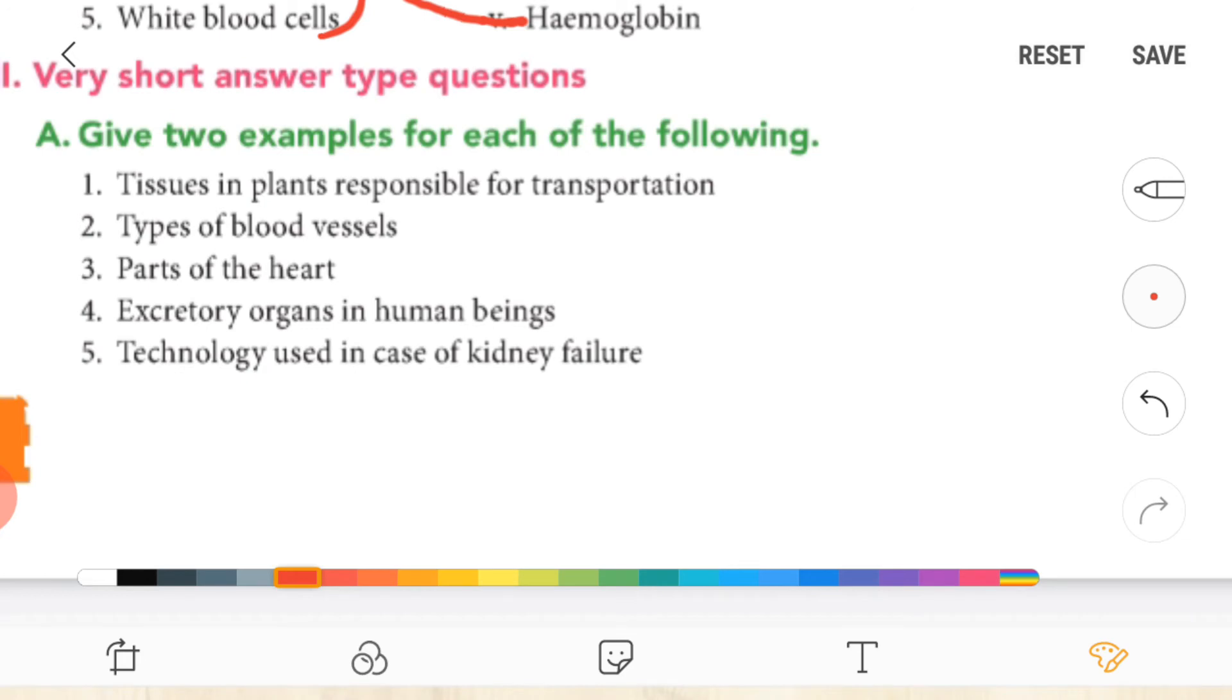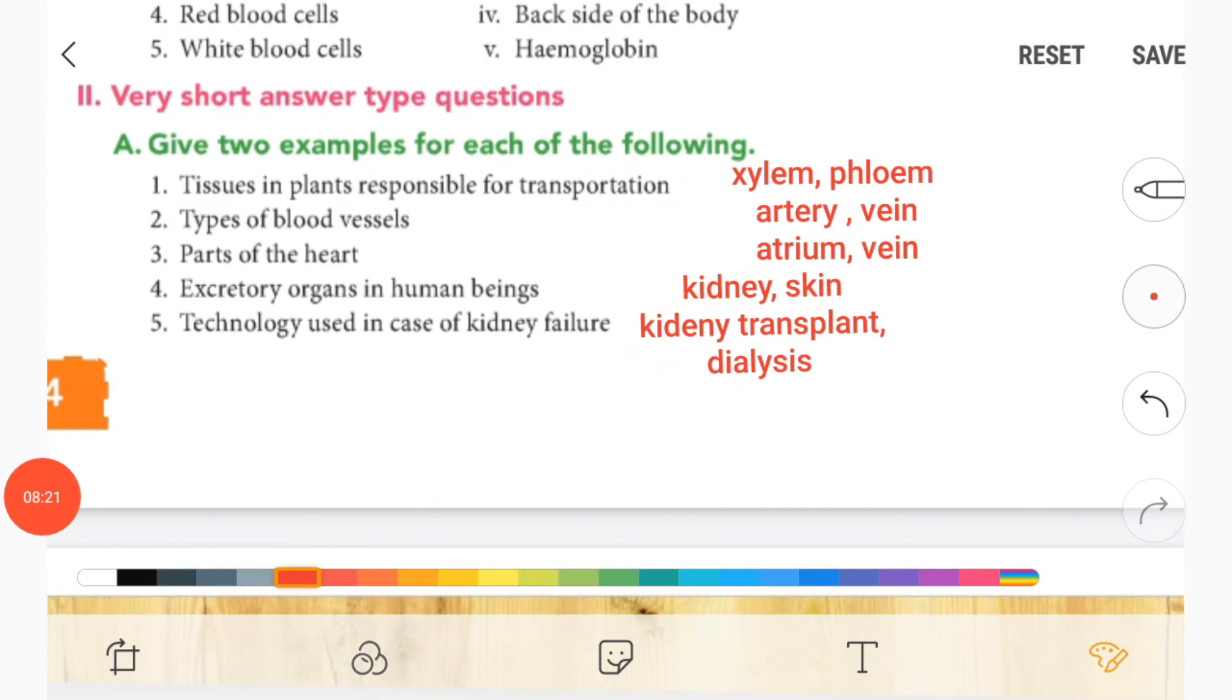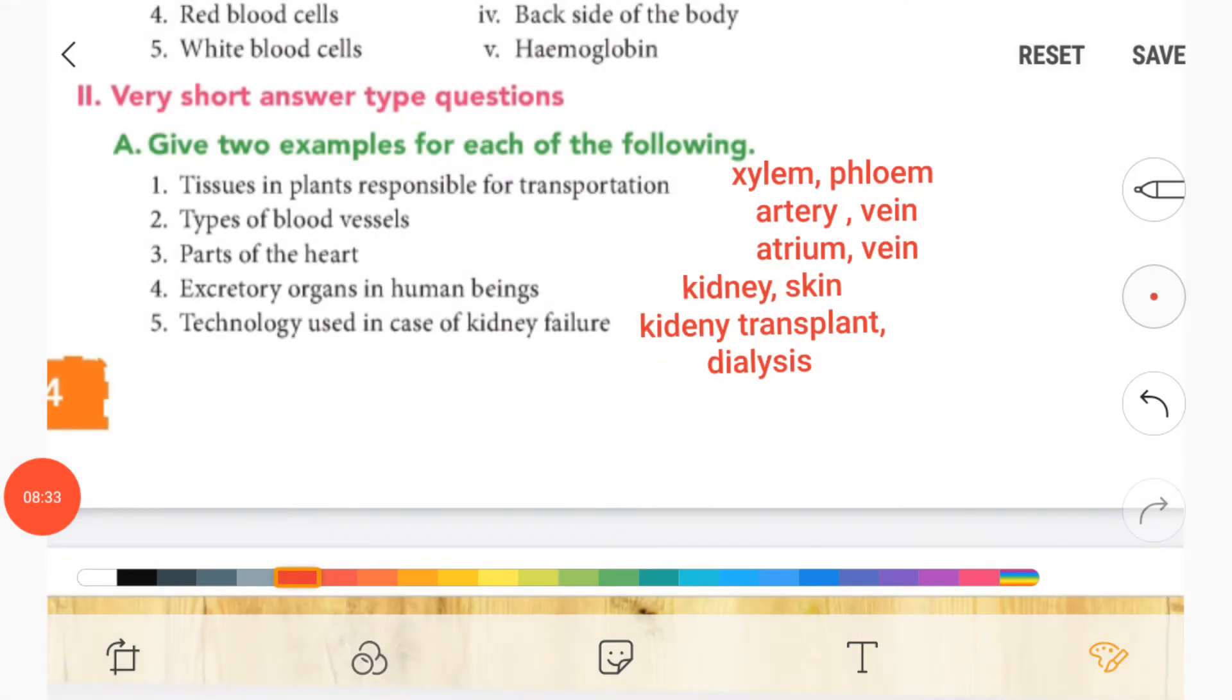Now guys let's solve two examples. First one, tissues in plants responsible for transportation—it is xylem and phloem.